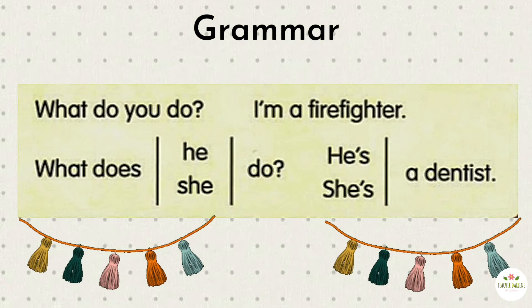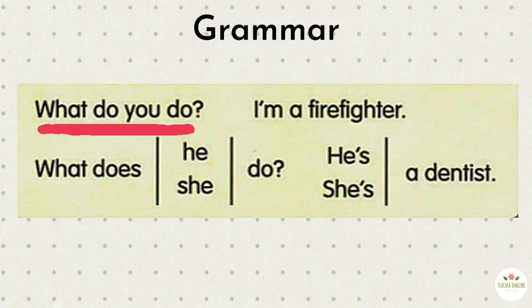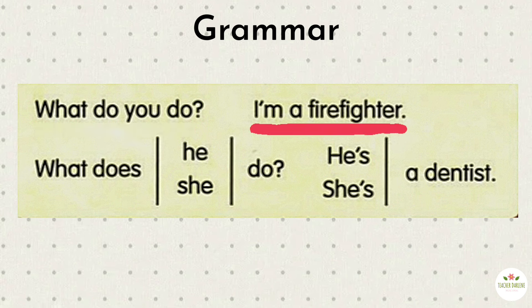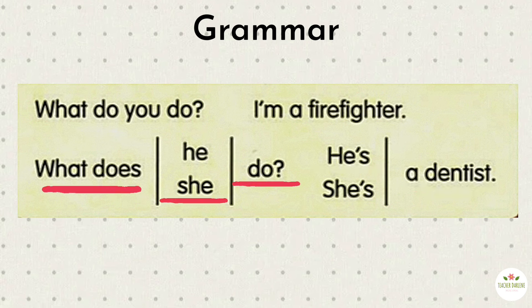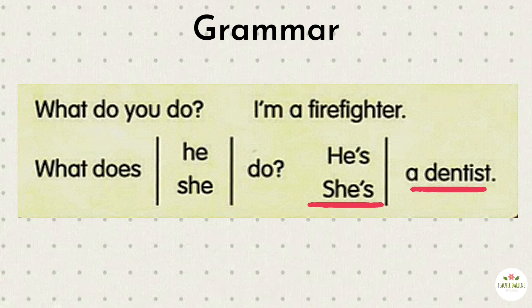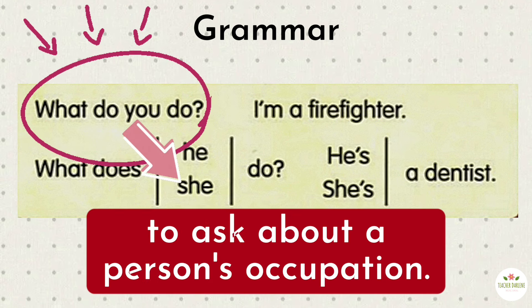Grammar. Look at the grammar box — listen and repeat. What do you do? I'm a firefighter. What does he do? He's a dentist. What does she do? She's a dentist. The phrase 'What do you do?' is used to ask about a person's occupation.